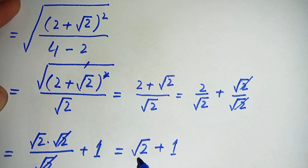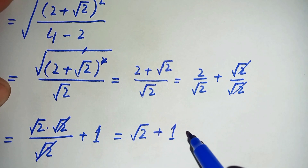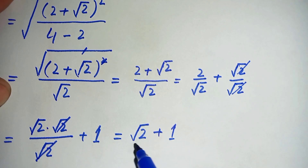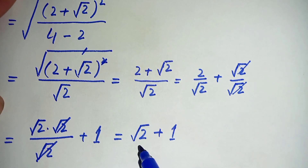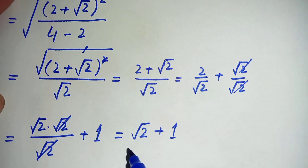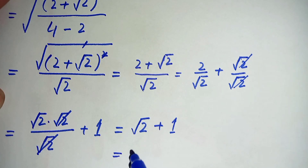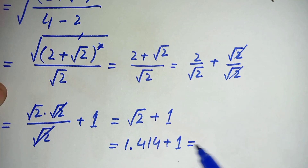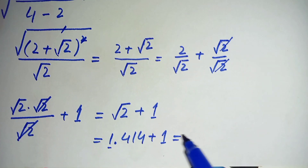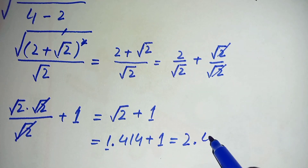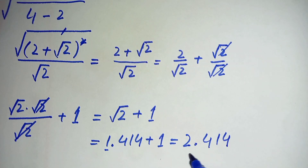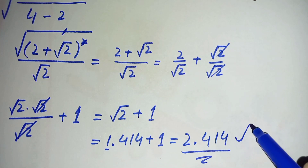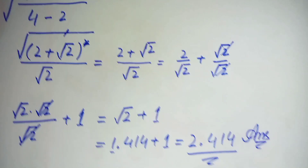Now we substitute the value of square root of 2. As students of mathematics, we should know the square root values of the basic numbers. Square root of 2 is approximately 1.414. So we get 1.414 plus 1, and adding these gives us 2.414. So the final answer is 2.414.